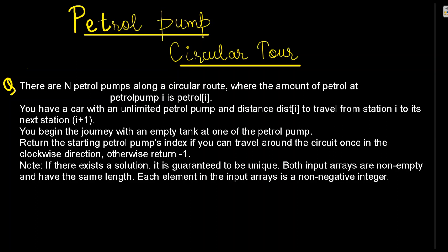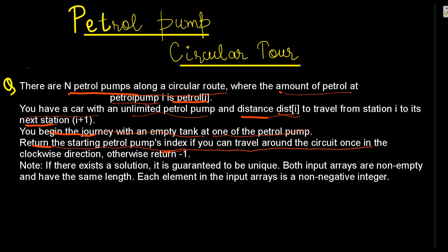The topic is Petrol Pump Circular Tour, one of the questions on LeetCode. The question is: there are N petrol pumps on a circular route, where the amount of petrol at petrol pump i is denoted by petrol[i]. We have a car with an unlimited tank and a distance dist[i] to travel from station i to the next station. We need to begin the journey with an empty tank at one of the petrol pumps and return the starting petrol pump index if we can travel around the circuit once in a clockwise direction; otherwise, return minus one.